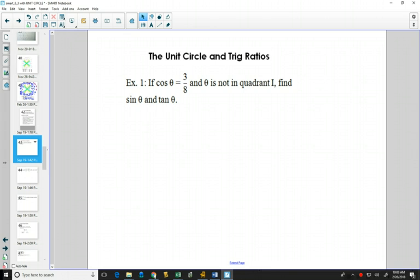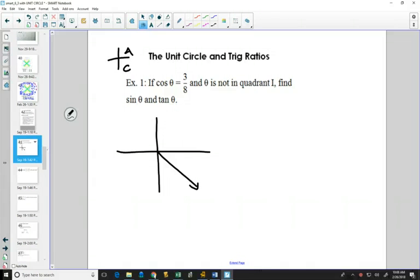Then what you're going to want to do is draw your four quadrants and draw a picture of this angle. Since theta is not in quadrant 1, what quadrant will this angle be? It'll be in quadrant 4 because of the CAST rule. We know that cosine is positive. Cosine is only positive in quadrant 1 and 4, but it's not in quadrant 1, so it needs to be in quadrant 4. So we draw our angle in quadrant 4.